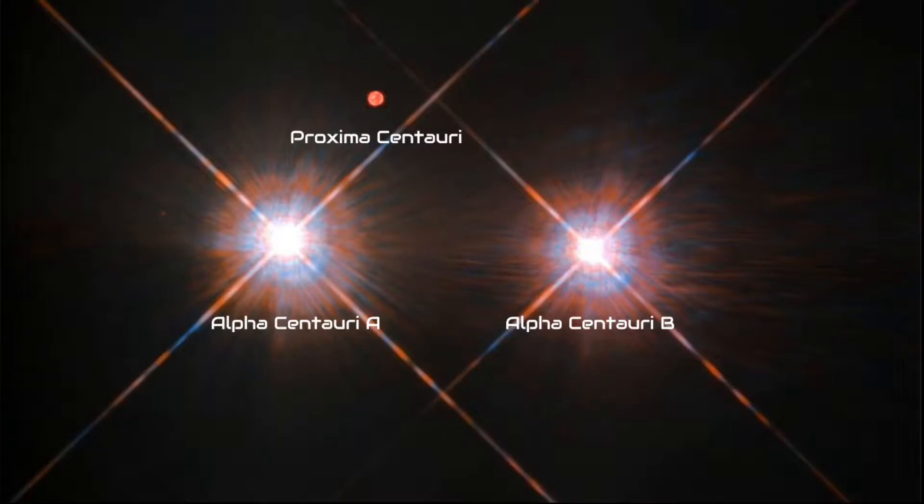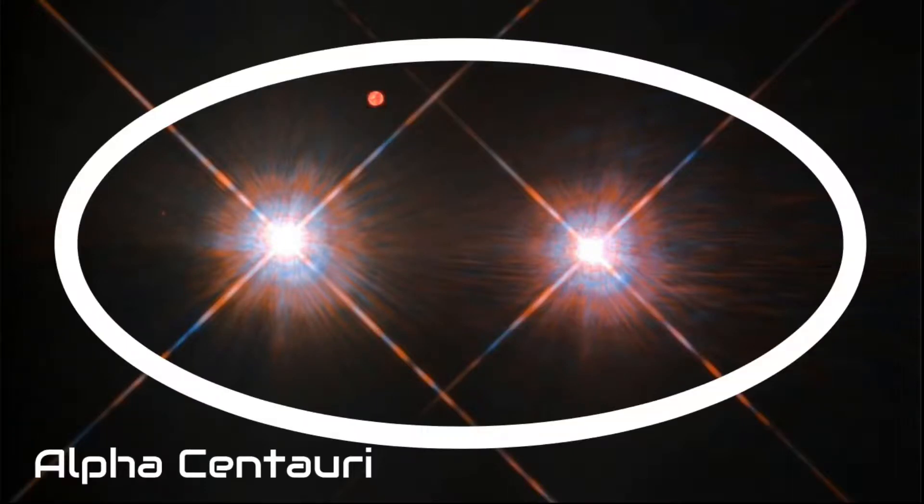Proxima Centauri isn't alone. It has two neighbors, Alpha Centauri A and Alpha Centauri B. All together, the three form the Alpha Centauri system.